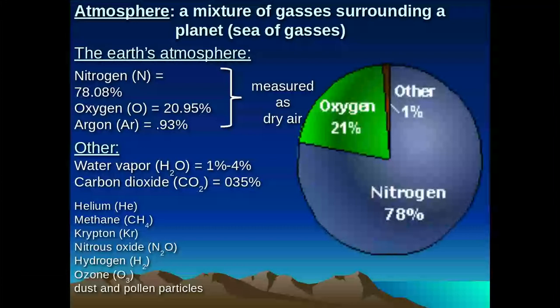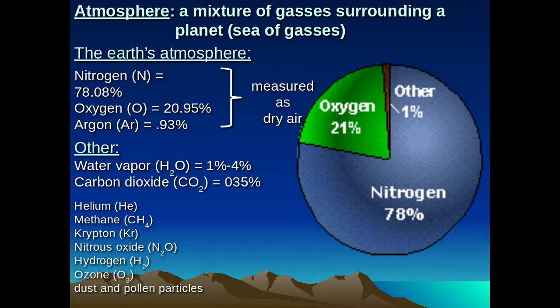If we look at the atmosphere in terms of its composition, the atmosphere certainly represents a mixture of gases. If you break these gases down and look at the diagram, you find that the atmosphere is about 78% nitrogen, 21% oxygen, and about a little less than 1% argon. There are some important components under the other 1%, including water vapor, which can range between 1% to 4% anywhere in our atmosphere. In the equatorial zones where evaporation is higher, that percentage is higher; in the polar areas, the percentages of water vapor are lower.